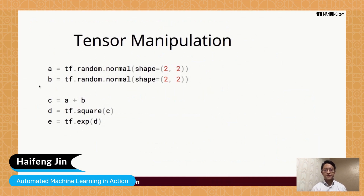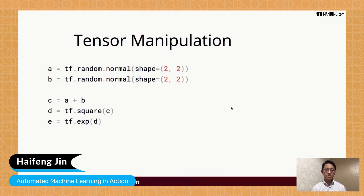TensorFlow is mainly a library capable of doing various tensor manipulations. As you can see in this example code, we initialize two matrices A and B — both two-by-two matrices — and we can do addition, squaring, or exponentiation of them. Almost every commonly used operation with matrices you can do with TensorFlow.